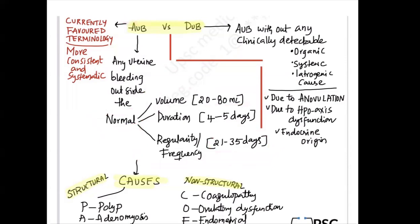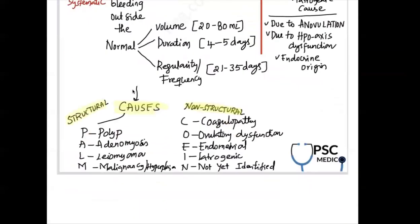This is the currently favored terminology, which is more consistent and systematic, and the causes have a very important mnemonic. We have structural causes and non-structural causes of AUB.